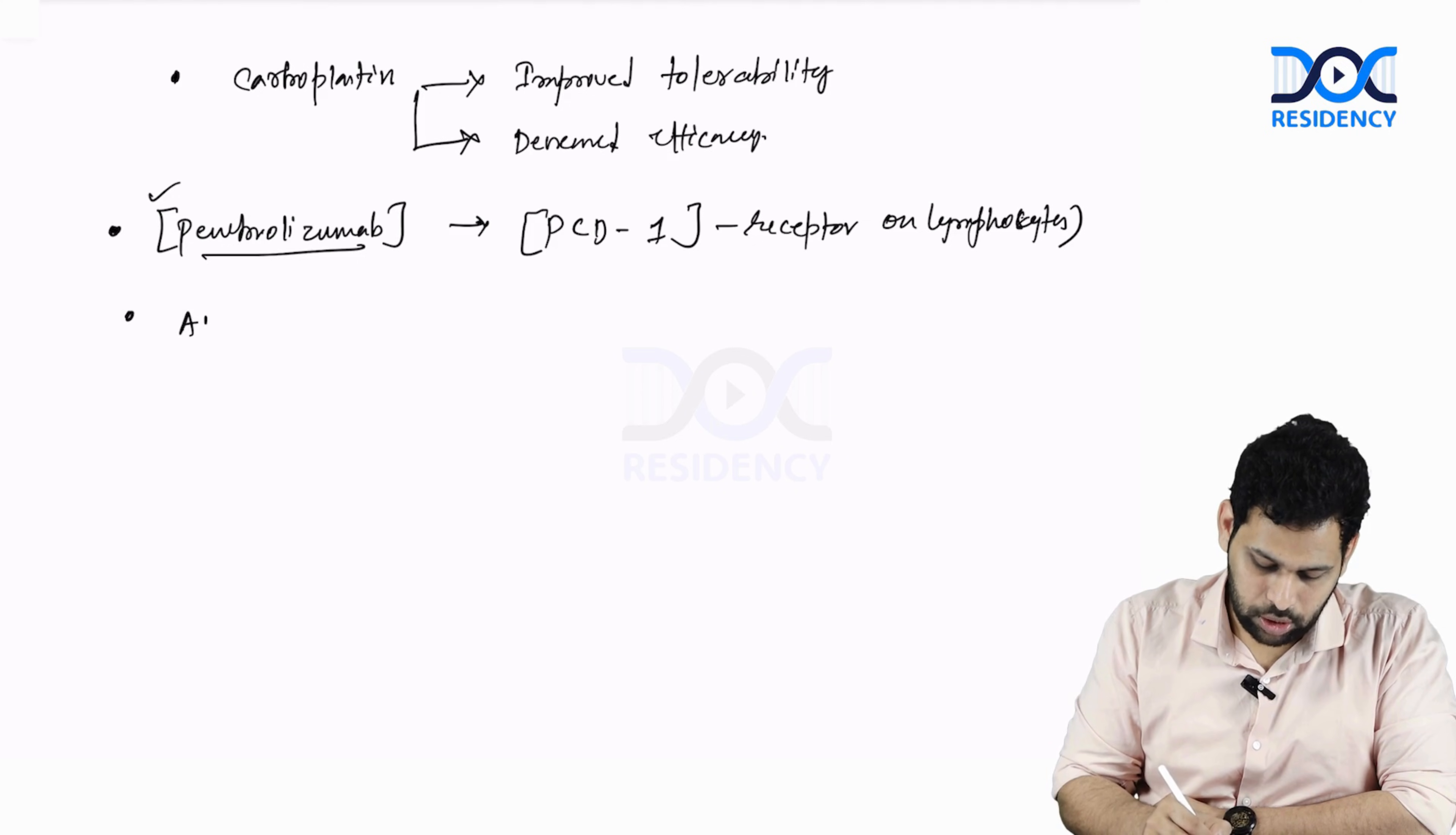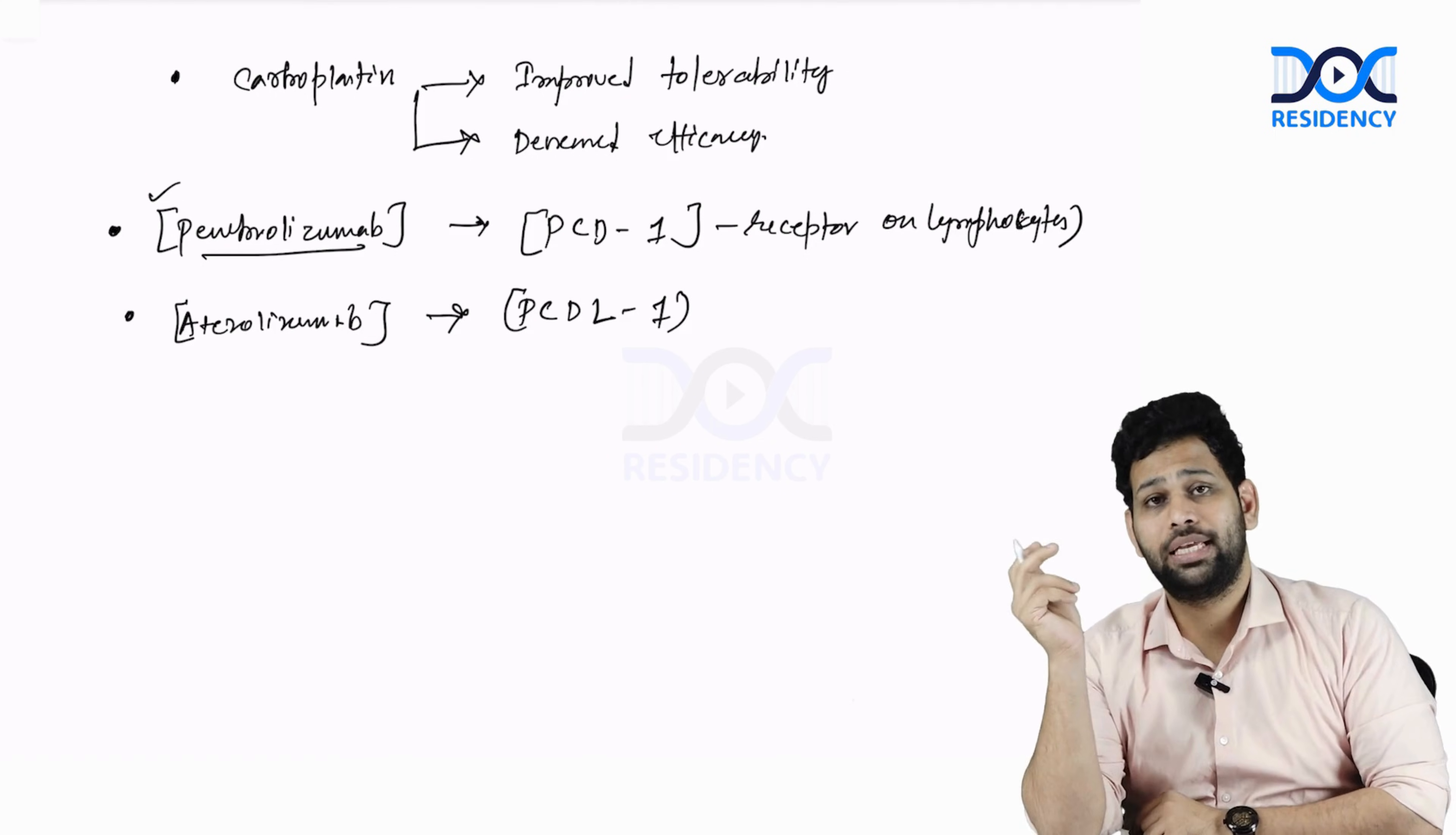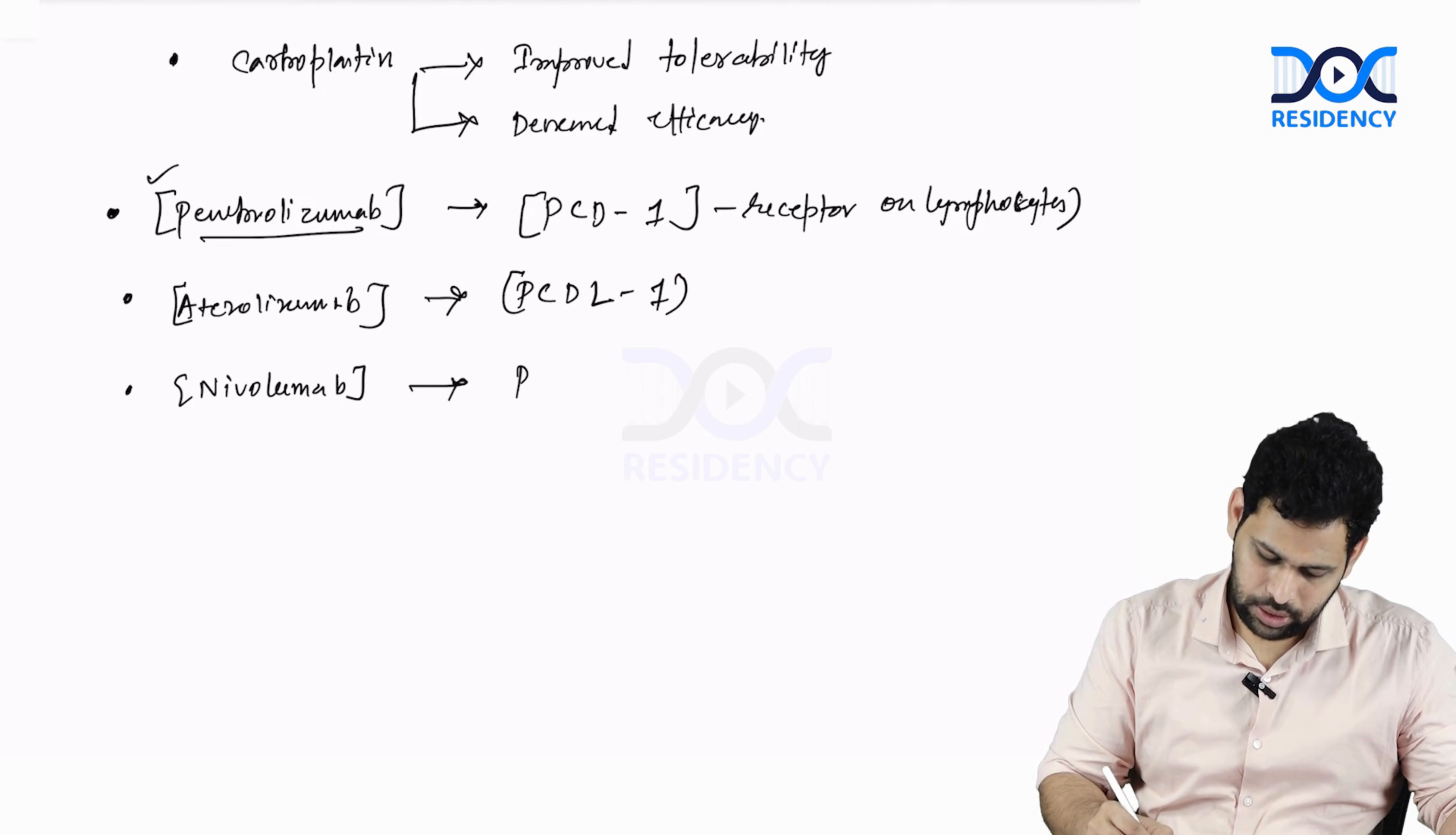The next one is Atizolizumab. This is against the programmed cell death ligand 1. This is also a humanized antibody. The next drug is Nivolumab. This antibody blocks the programmed cell death 1 receptor.